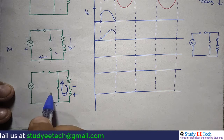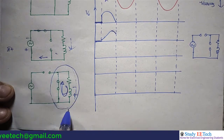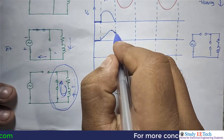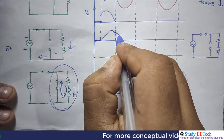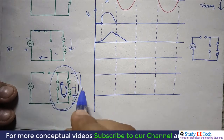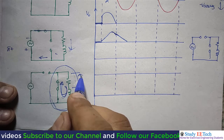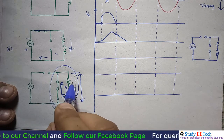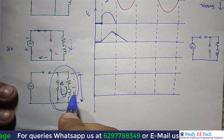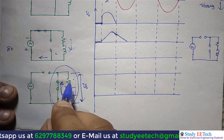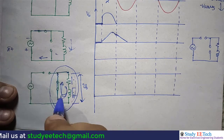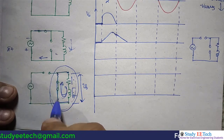The current is now confined to the output loop — flowing through the freewheeling diode path. The voltage across the load becomes zero because this diode creates a short circuit across the load terminals. Applying KVL: with the freewheeling diode conducting and both load terminals shorted together, the output voltage VO is zero.